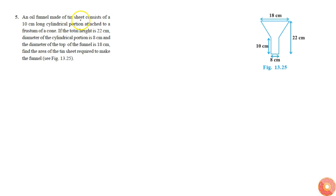Given that an oil funnel is made of thin sheet, it consists of a 10 centimeters long cylindrical portion. As you can see in the figure, this is the cylindrical portion. The total height is 22 centimeters, and the diameter of the top of the funnel is 18 centimeters. We are asked to find the area of thin sheet required to make it.